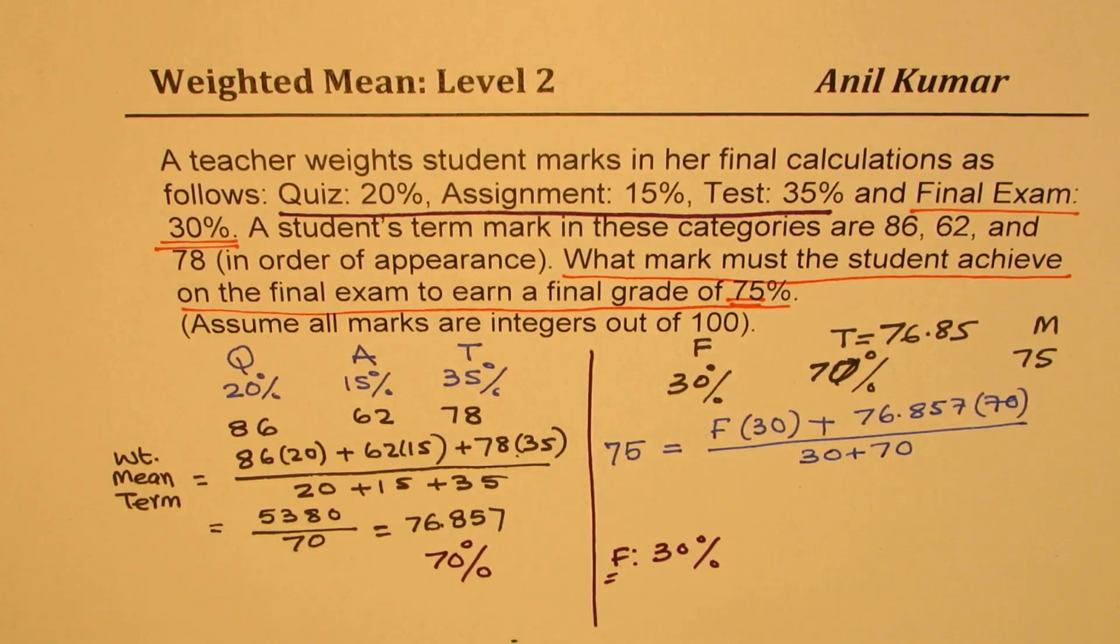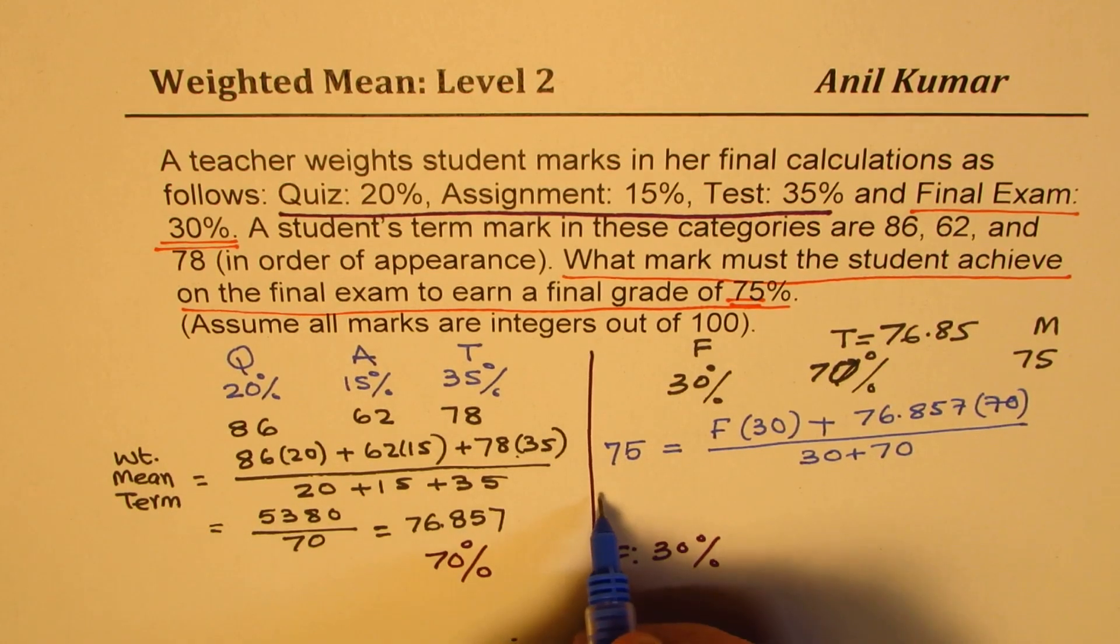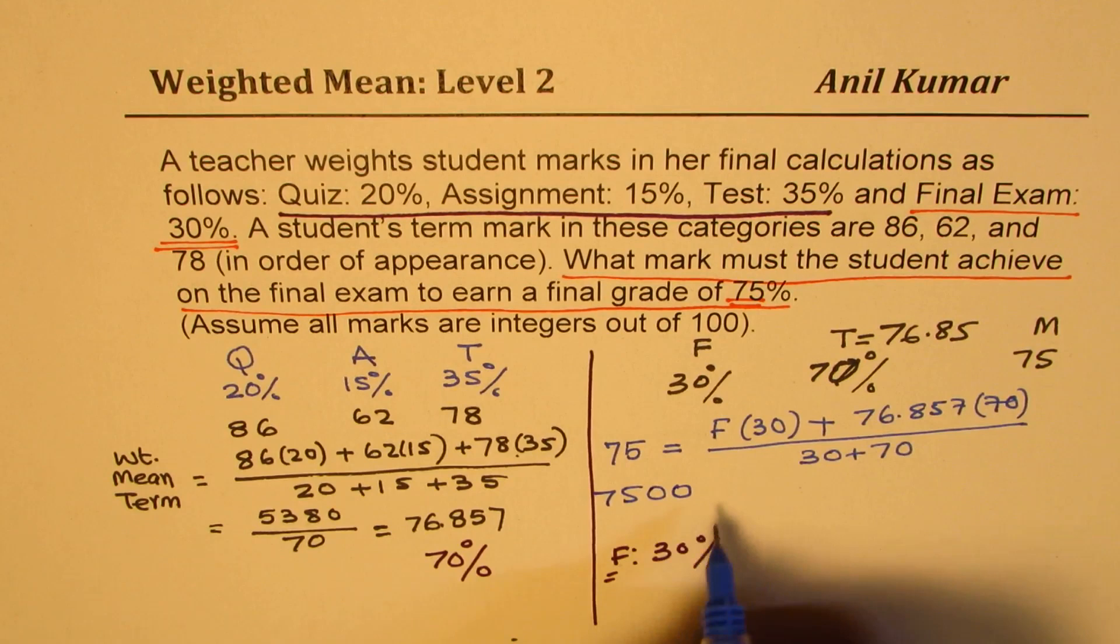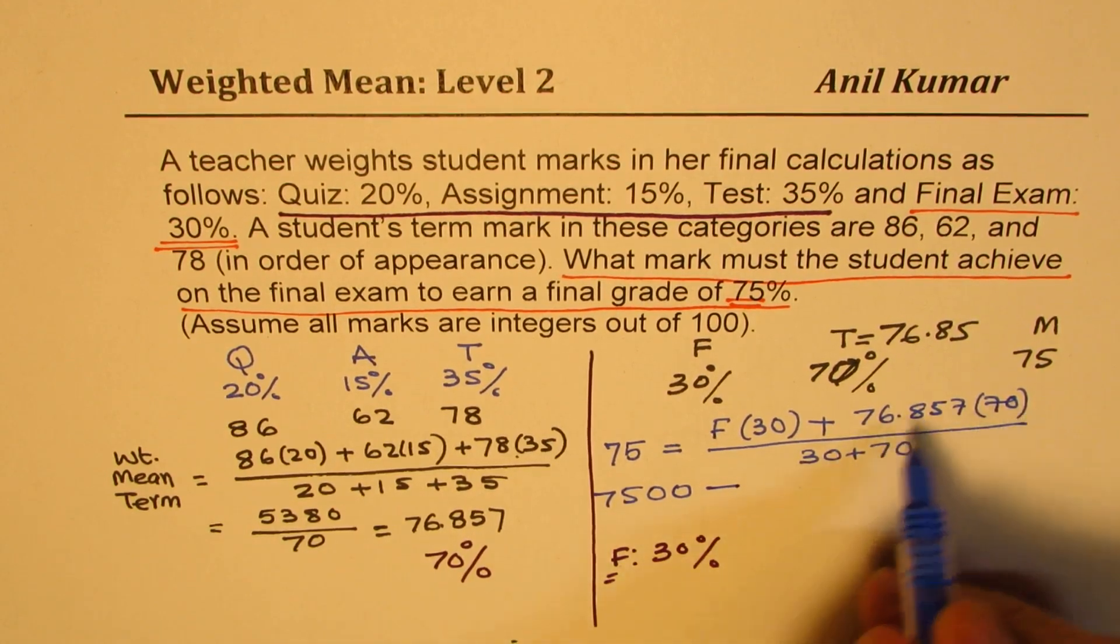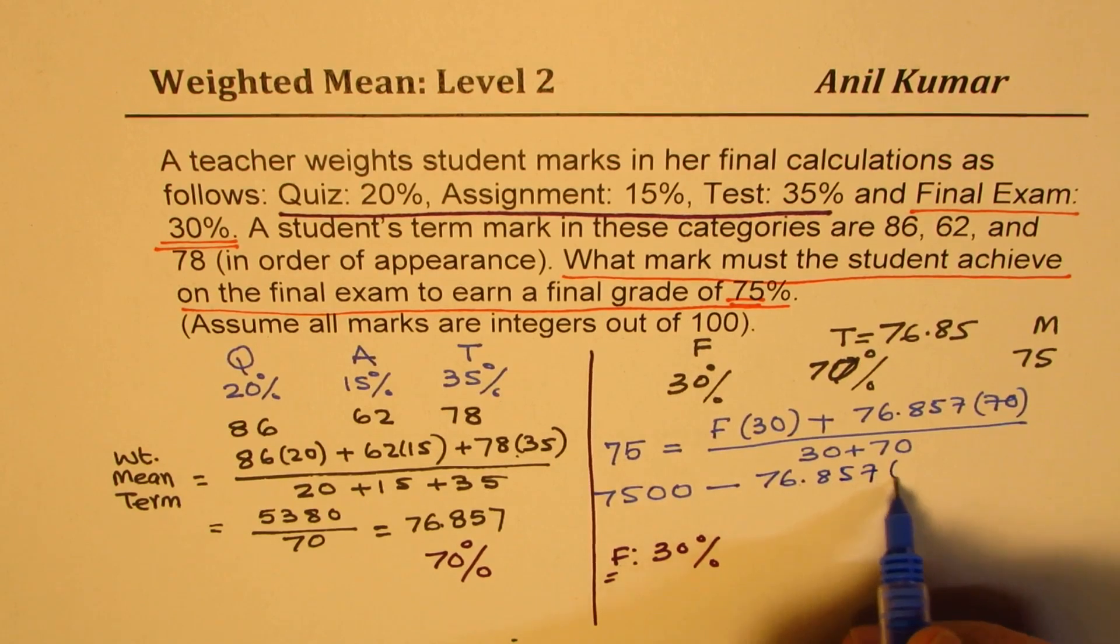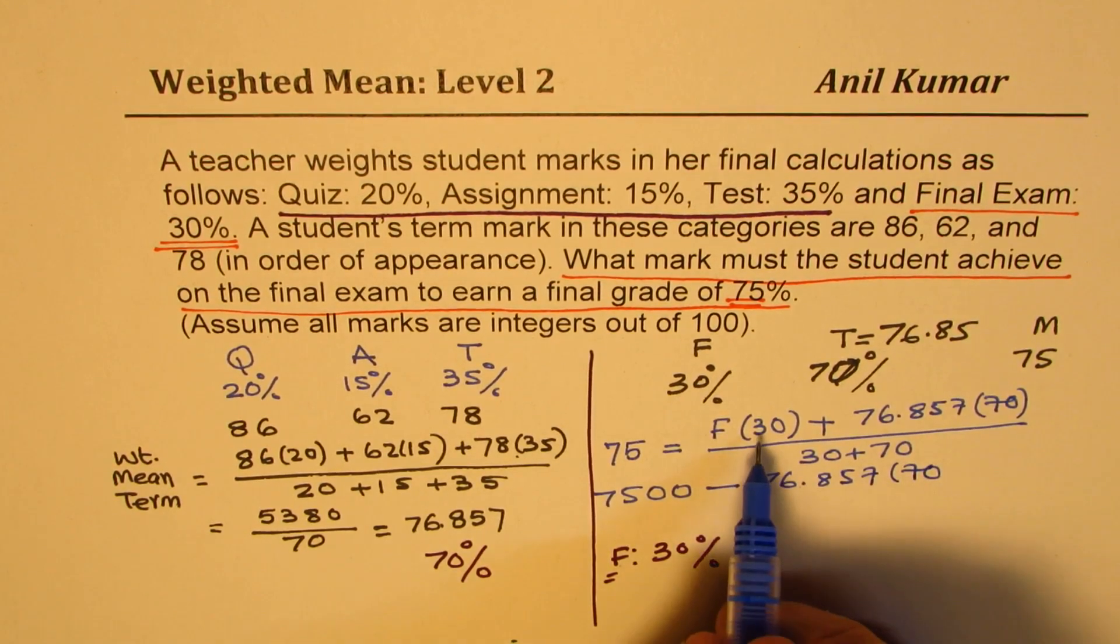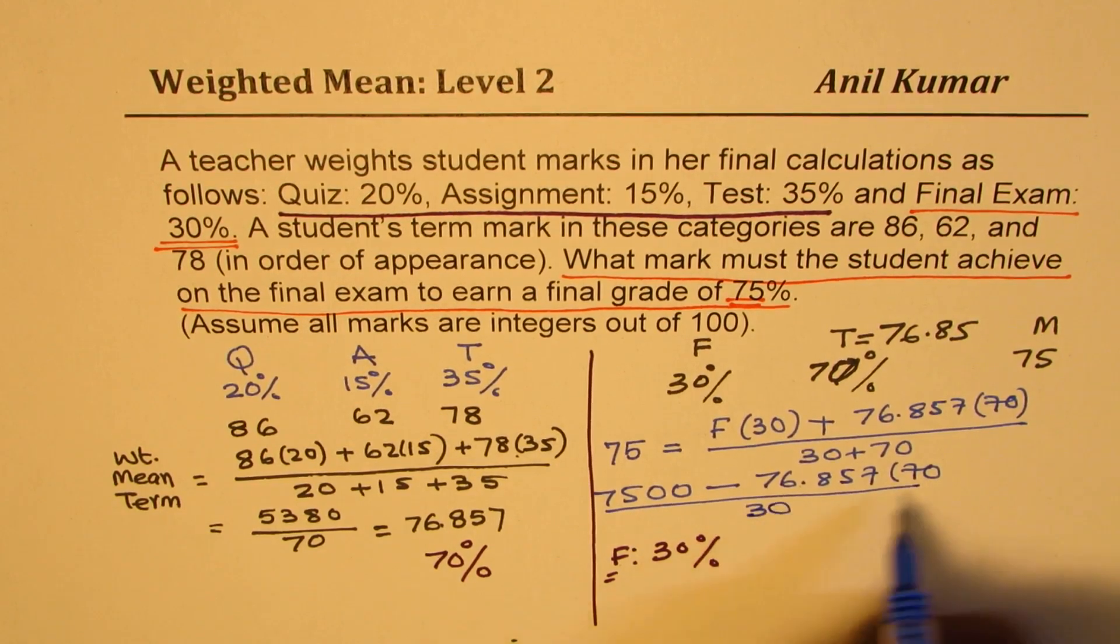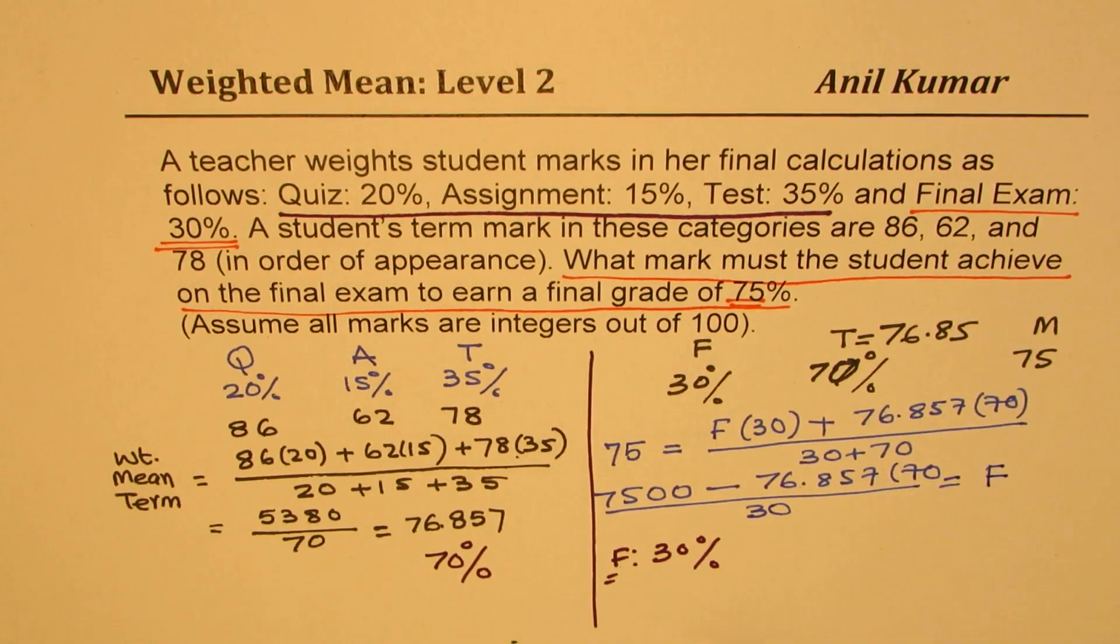So if you cross multiply, we get 75 times 100, right? Take away this number, which is 76.857 times 70, we get F times 30. So if you divide this by 30, you get your final exam marks. Perfect, let's calculate this answer.